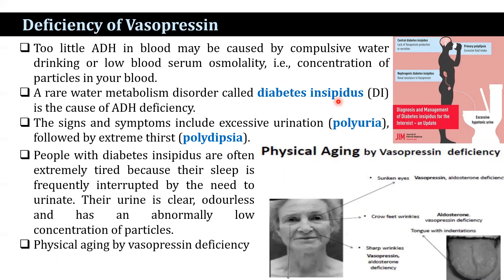People with diabetes insipidus are often extremely tired because their sleep is frequently interrupted by the need to urinate. Their urine is clear, odorless, and has an abnormally low concentration of particles. Diabetes insipidus can be due to neurogenic, nephrogenic, or psychogenic causes.